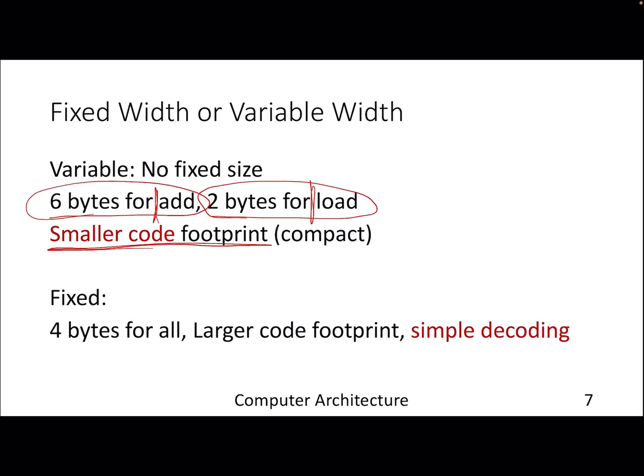But if you look at the fixed encoding something like MIPS, it will generate large code footprint, but the decoding becomes simple as you have already seen. The pop of the bits are kind of simple, like similar or same for R-type and I-types of instruction. J-type also says the opcode, only the lower 26 bits are different. These are the trade-offs that we need to take care when we are dealing with fixed width ISA or a variable width ISA.